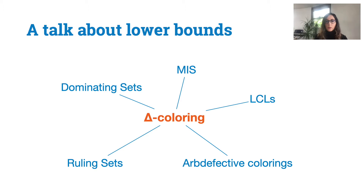In this talk we will see how the delta vertex coloring problem is strictly related to many other symmetry breaking problems that have been studied in the literature, such as dominating sets, MIS, ruling sets, and ARP defective colorings. We will also see how delta coloring is related to questions regarding complexity theory, and in particular to an open question regarding a well-studied class of problems called locally checkable labelings.